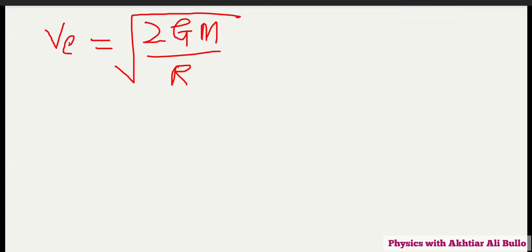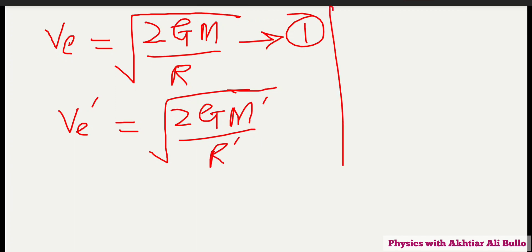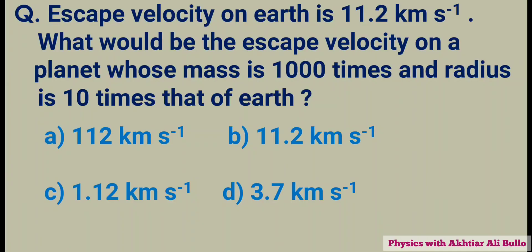On the surface of the planet, the escape velocity will be equation number 1. We have to calculate ve dash, which is equal to square root of 2G times M dash upon R dash. Given that M dash equals 1000M and R dash equals 10R.